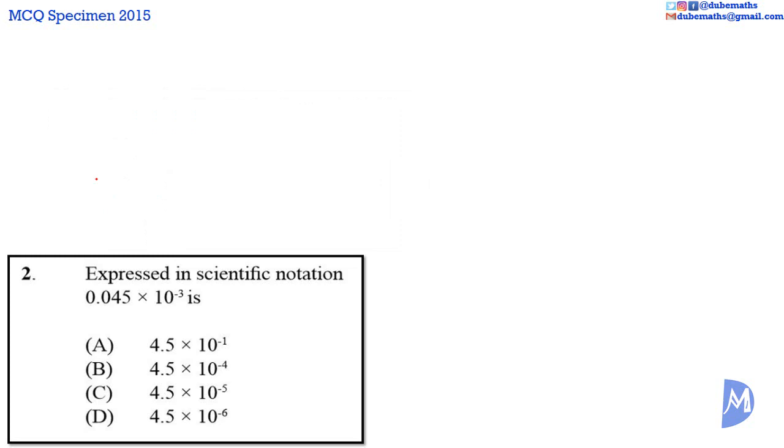Question 2: 0.045 multiplied by 10 to the power of negative 3. Express this in scientific notation or standard form. In this question, I will express 0.045 in scientific notation and then simplify. We have to move the decimal point so that there is only one non-zero digit to the left of it, so that is after the 4.